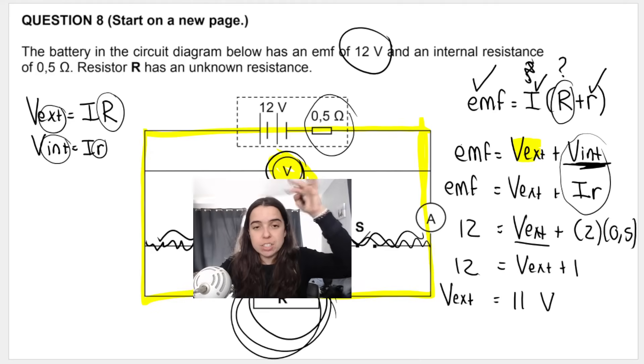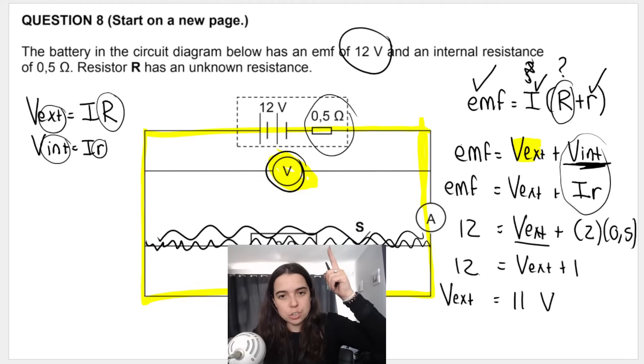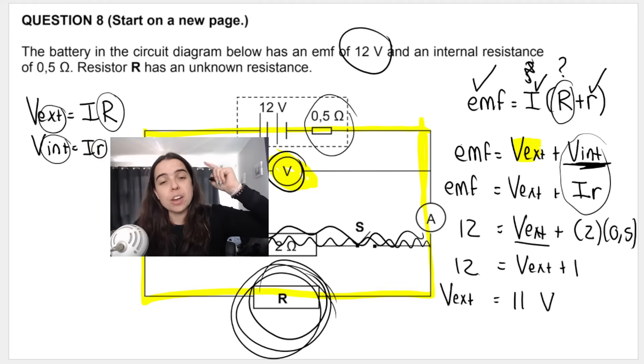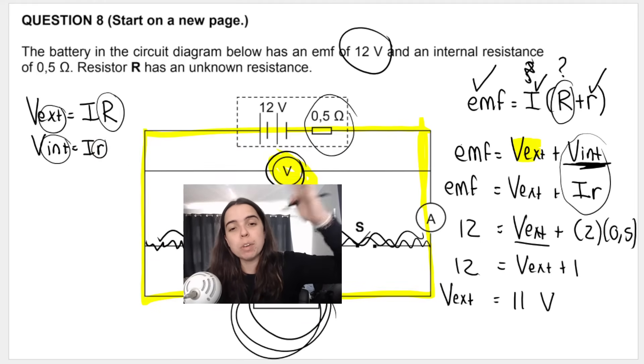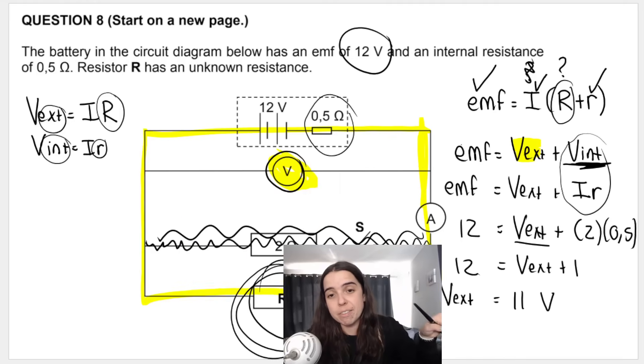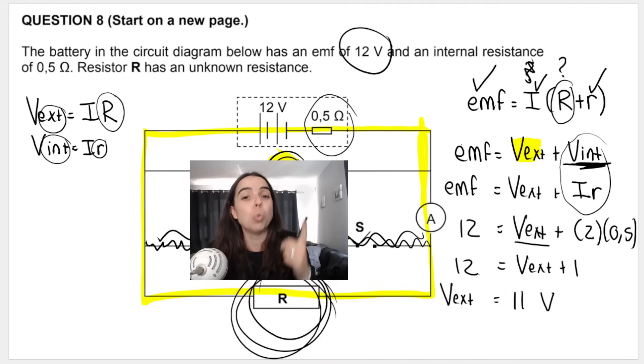Which means that when current is flowing through the circuit, this voltmeter over here will read 11 volts. Remember when the switch is open, not the switch, another switch. So the main switch in the circuit, when that is open, the voltmeter would read the EMF, which would be 12 volts. When we close it, it reads V external, which is 11 volts. That means that V internal, the lost volts is one volt.